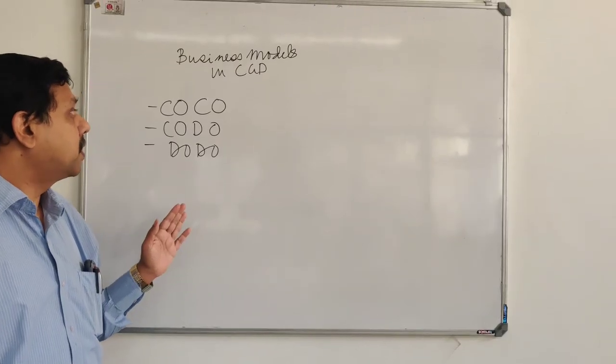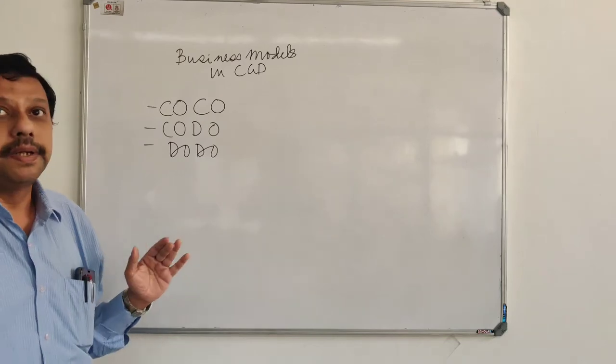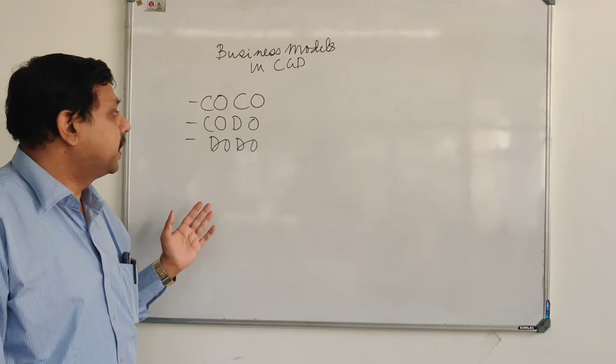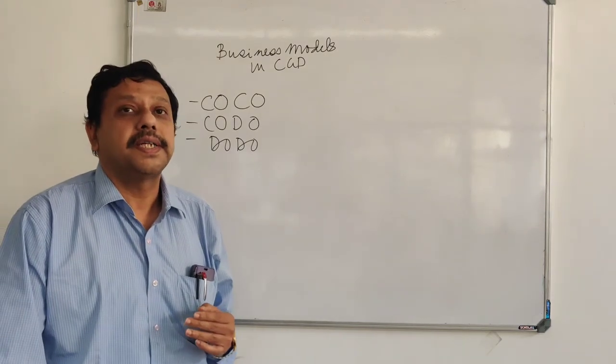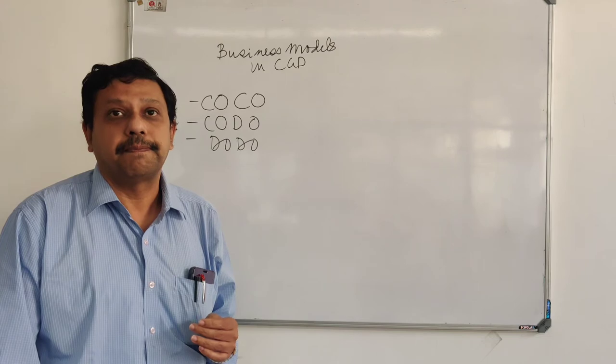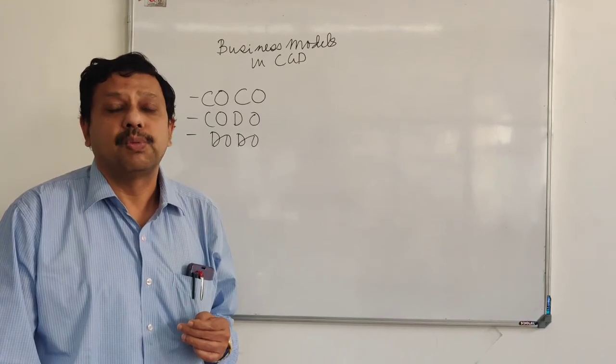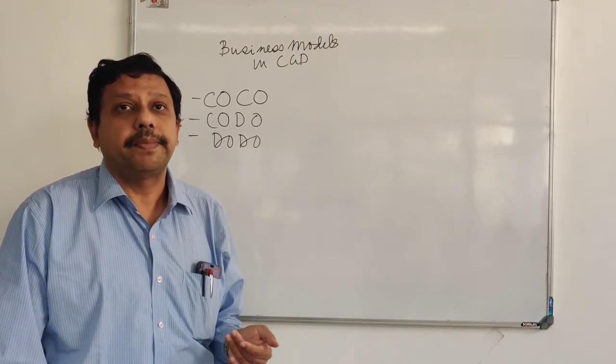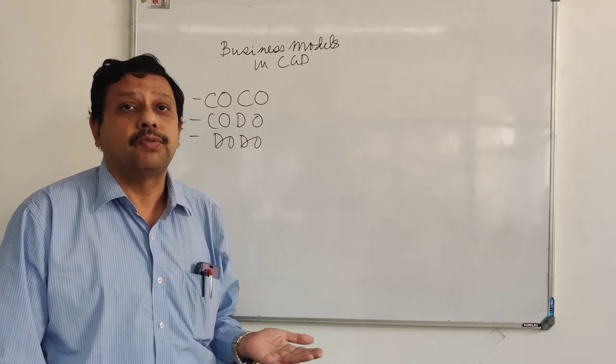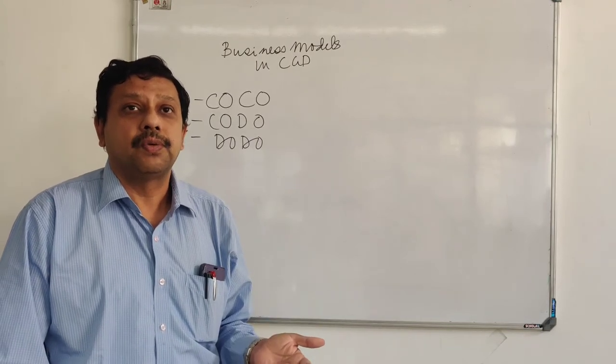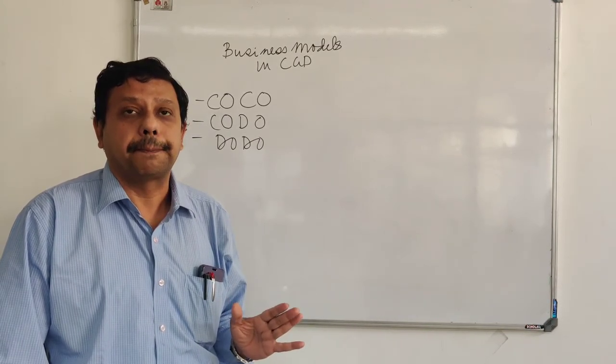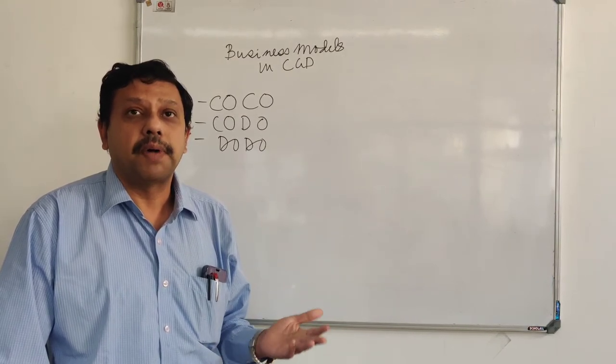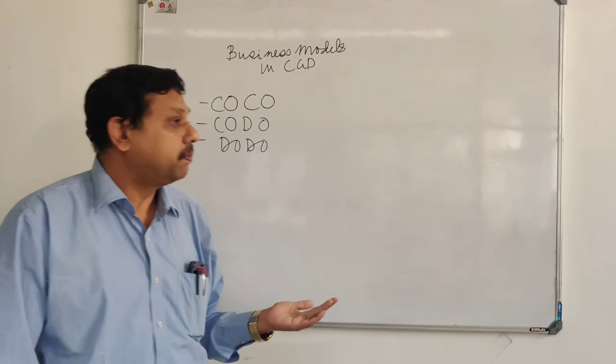So when we talk about the company owned and company operated, company owned and dealer operated, and dealer operated and dealer owned, some criteria have to be fulfilled. Now if you see the advertisement where the eligibility and criteria are given, and the white papers on which we have worked, I can give you a gist what the attributes should be. Anybody who is applying for these models or will be participating in this type of bids, they have to be at least 10th pass qualified.